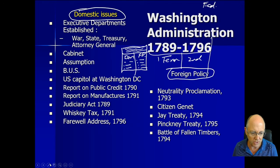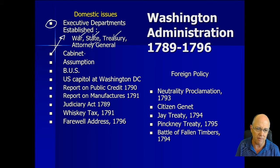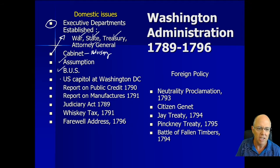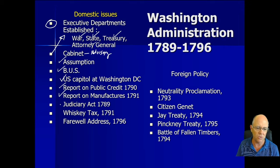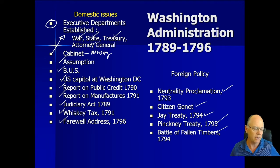What you have to know specifically: Washington creates the executive departments — Secretary of War, Secretary of State, Treasury, Attorney General — known as his cabinet, his advisors. You also need to know the assumption, the Bank of the United States, the location of the Capitol in Washington D.C. as a political issue, the Report on Credit, Report on Manufacturers, Judiciary Act, Whiskey Rebellion, and his Farewell Address. For foreign policy: the Neutrality Proclamation, Citizen Genêt, Jay Treaty, Pinckney Treaty, and the Battle of Fallen Timbers. This is your study guide for the test on Washington.